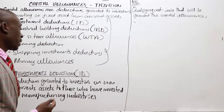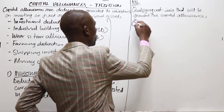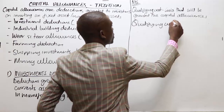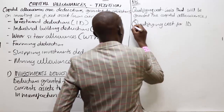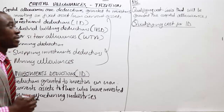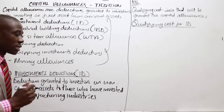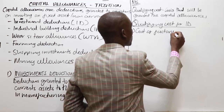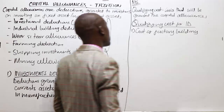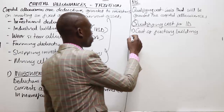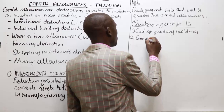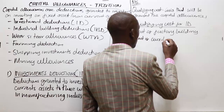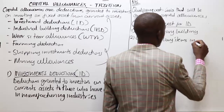Now let's look at the qualifying costs for ID. These are the costs that will be granted capital allowances. Number one, we always talk of the cost of the factory building, which will always qualify for ID. Number two, we talk of the costs of auxiliary items in manufacturing — items that supplement manufacturing processes.